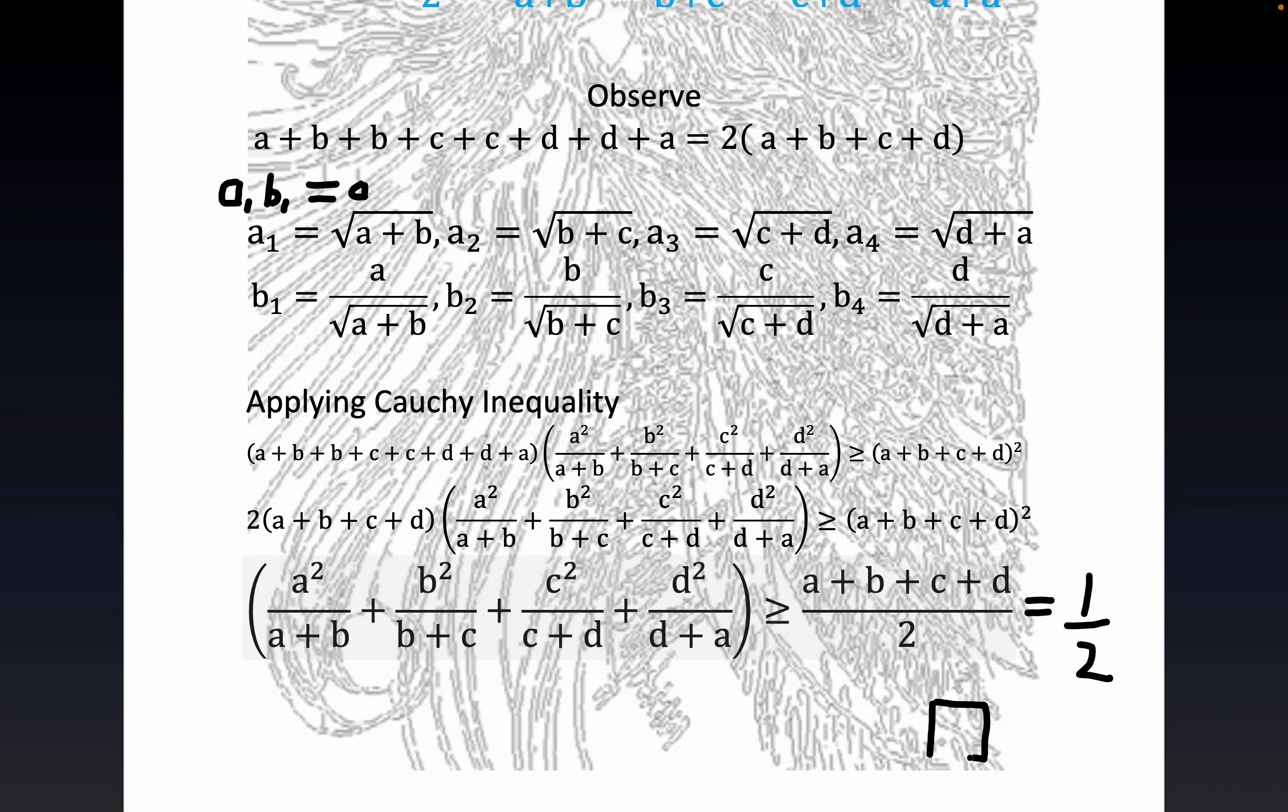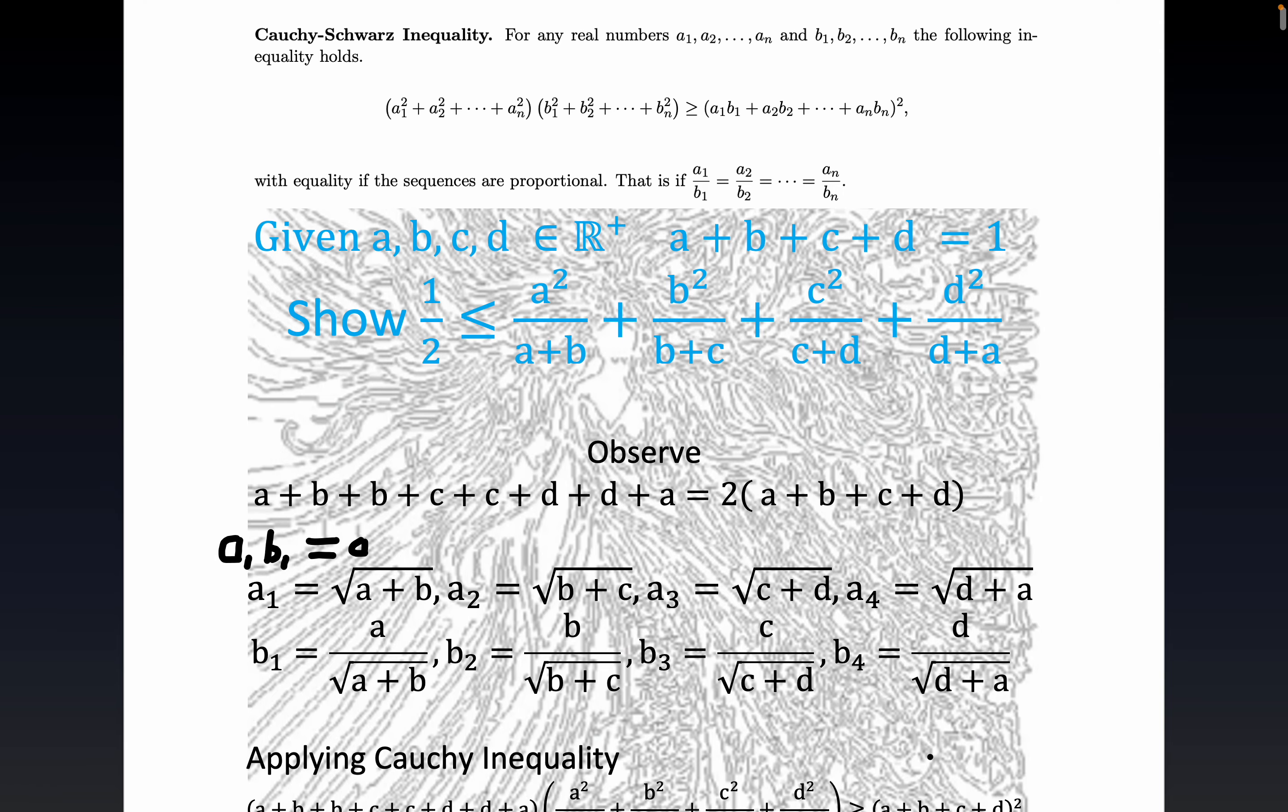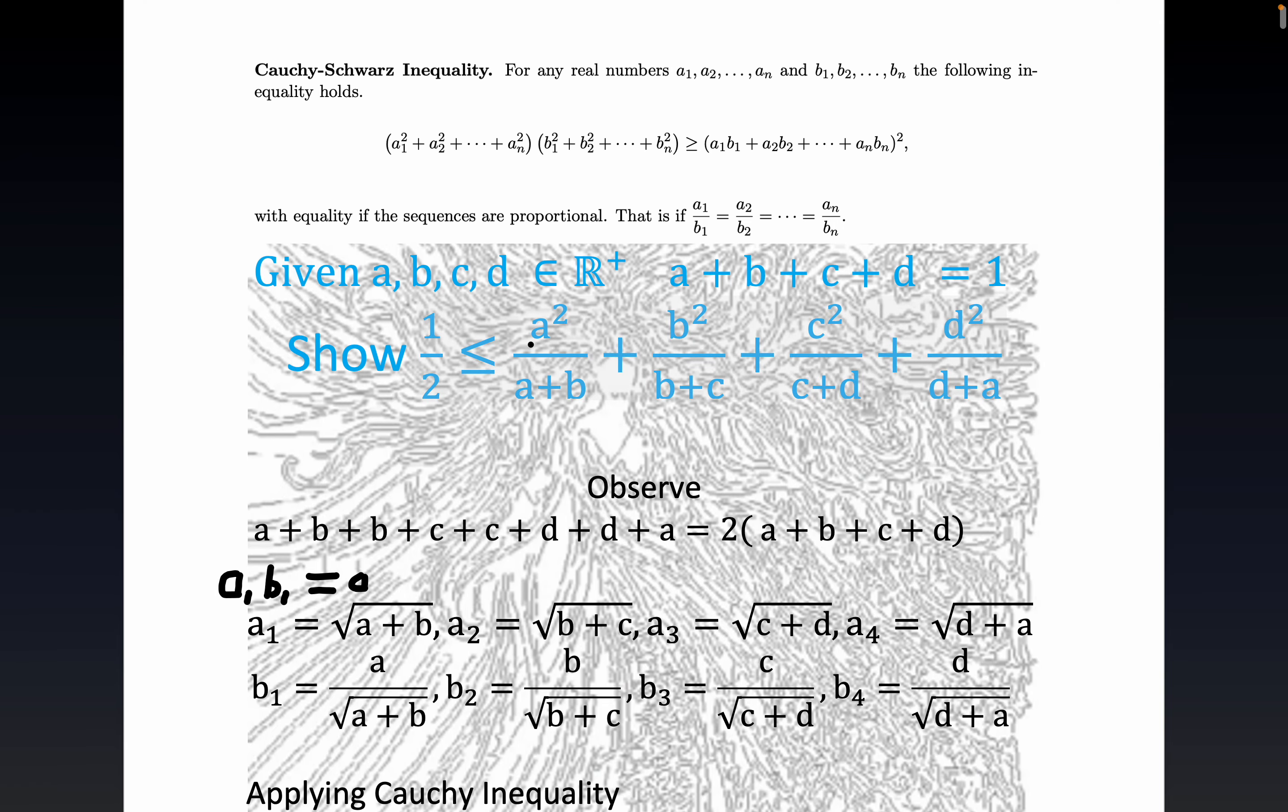And here we just noticed from the original expression there's squared terms, right. Well, there's a ton of squared terms in the Cauchy-Schwartz inequality right, along with this what you might call a dot product right here.